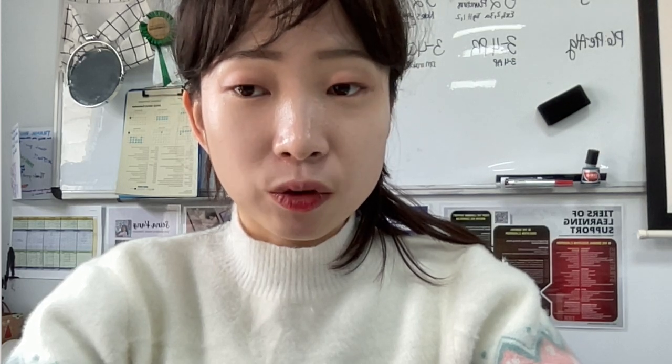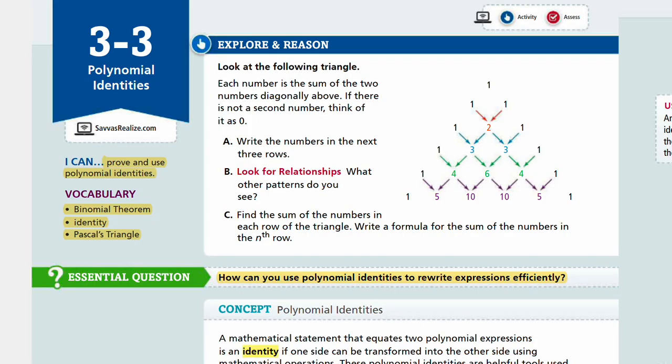Welcome to Algebra 2 Lesson 3-3, Polynomial Identities. In this lesson, we will prove and use polynomial identities. We have three new vocabularies here: Binomial theorem, identity, and Pascal's triangle. So we'll look at these three big concepts.